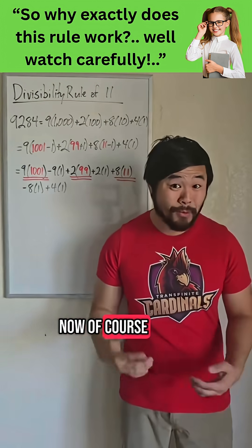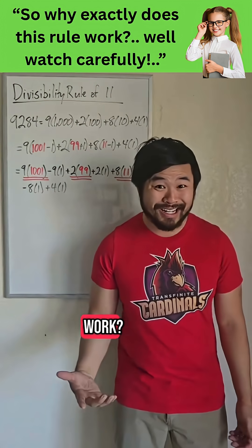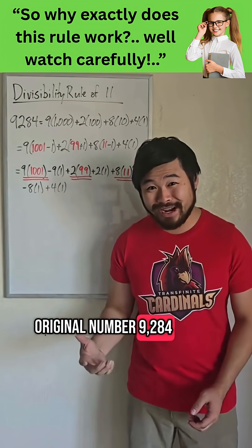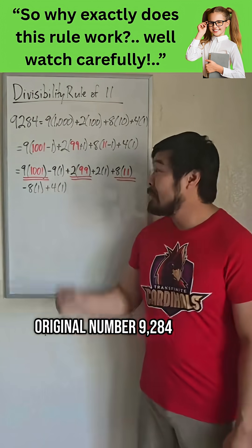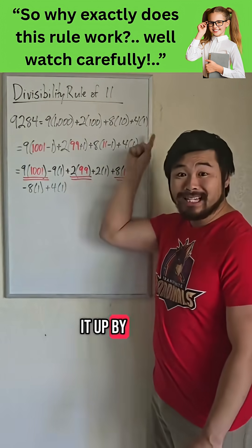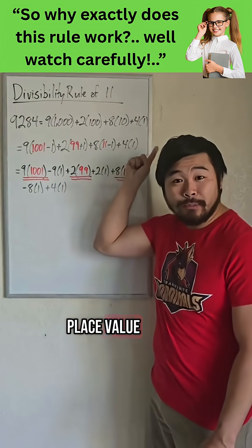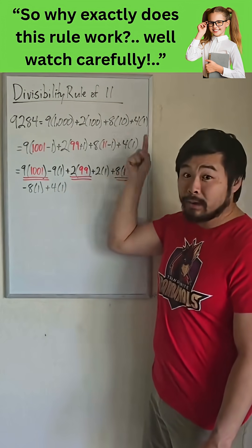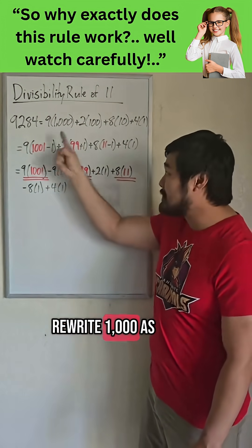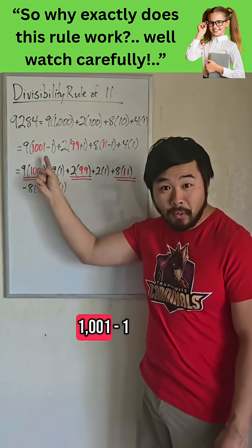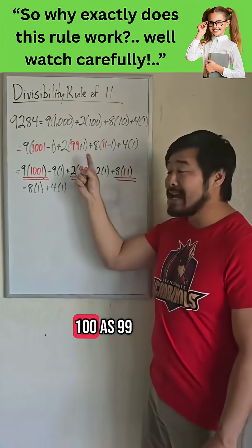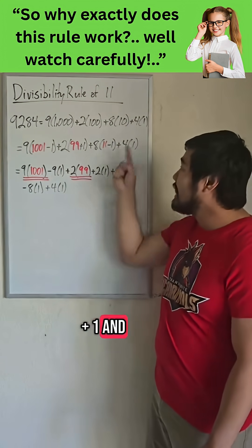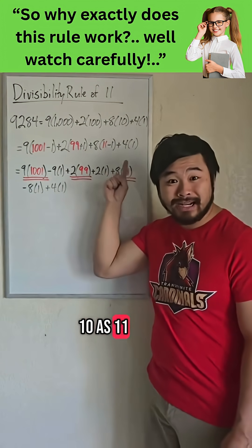Now, why does this work? Well, let's use our original number, 9,284. We could break it up by place value, and I'm going to strategically rewrite the powers of 10. I'm going to rewrite 1,000 as 1,001 minus 1, 100 as 99 plus 1, and 10 as 11 minus 1.